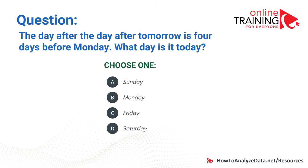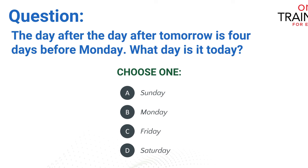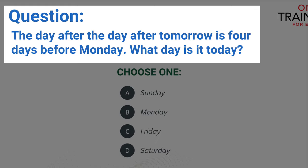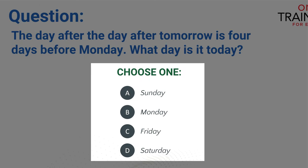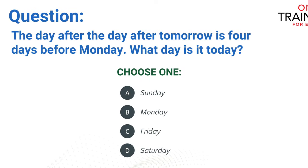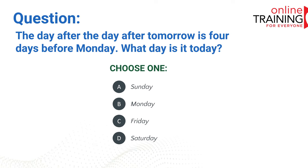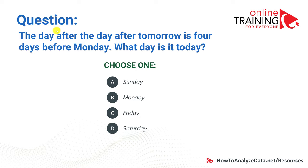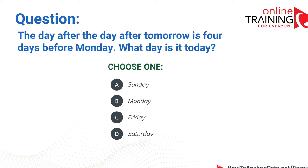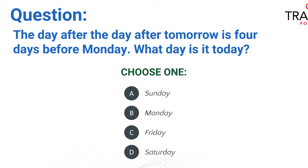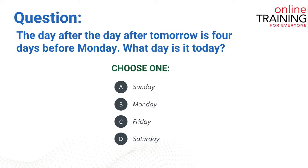Here's a tricky question frequently used in logical reasoning tests. The day after the day after tomorrow is 4 days before Monday. What day is it today? Choices: Sunday, Monday, Friday, Saturday. Use the reverse method: 4 days before Monday is Thursday. The day after the day after tomorrow is Thursday, so the day after tomorrow is Wednesday, meaning tomorrow is Tuesday. If tomorrow is Tuesday, today is Monday. The correct answer is B: Monday.